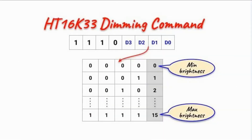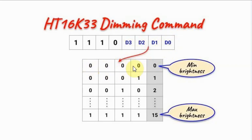We can also control the dimming of the 14-segment display by sending the dimming command. The least significant nibble — four bits — determines the dimming or brightness level from minimum to maximum brightness.